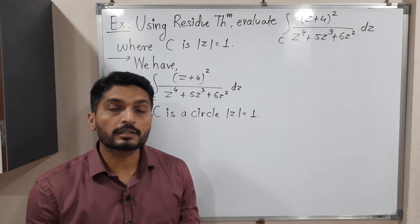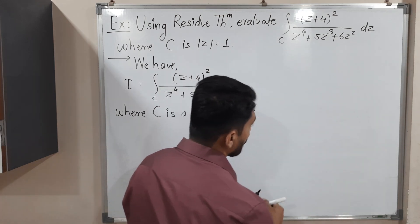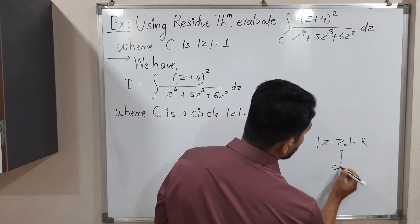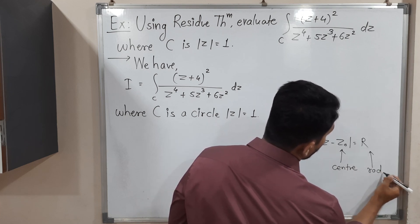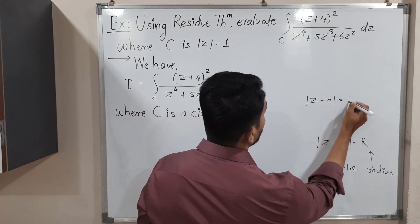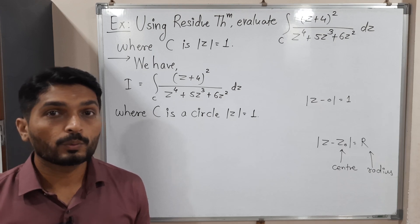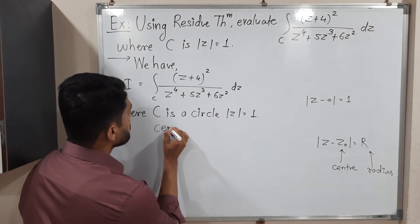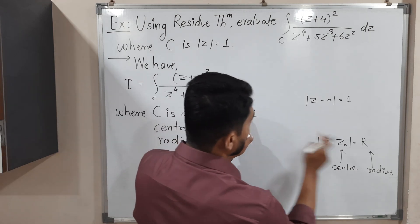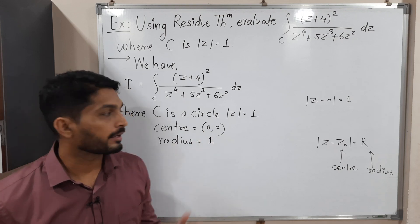To draw the circle we need to find the center and radius. I will compare the given equation with the standard equation of a circle: mod(z − z₀) = r, where z₀ is the center and r is the radius. Here we have mod z only, meaning mod(z − 0) = 1. Comparing, z₀ = 0 (the origin) and r = 1.